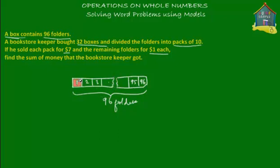Let's color them. So these are the colored folders. Now let me mark this as a box because this is a box. This is one box and it contains 96 folders. Now if there were 32 such boxes, how many folders would be there? So what you do is times 32. The total number of folders in 32 boxes would be 32 times 96.